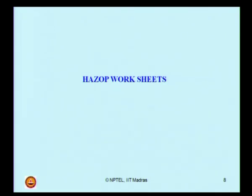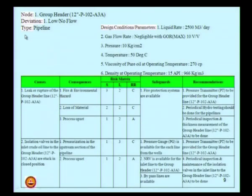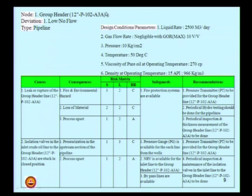Presuming you have understood the functioning of a group gathering station and the importance of the selected nodes, let us now take forward the HAZOP worksheets prepared using PHA Pro software. The first node is identified and named node 1. The software output says node 1 is the group header, which is a 12-inch pipe designated 102A3A class. The deviation from the design intent is low or no flow, and the type is a pipeline. The design conditions are: liquid rate 2500 cubic meters per day, gas flow negligible, operating temperature 50°C, pressure 10 kg/cm², viscosity 270 cP, and density 966 kg/m³.